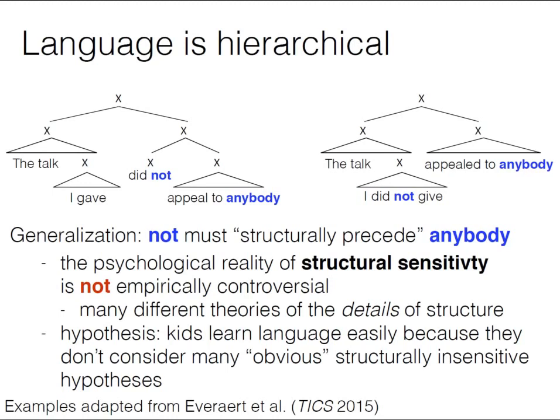In these two diagrams of the sentence, it's not that 'not' simply comes before 'anybody' — it has to exist in this particular structural relationship, which doesn't hold in the right-hand tree. The correct generalization is that 'not' must structurally precede 'anybody'. The psychological reality of structural sensitivity is not empirically controversial. There are lots of theories about the specifics of what this structure looks like, but the basic fact is settled — disputing it is like disputing climate science outside of climate science.